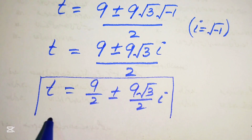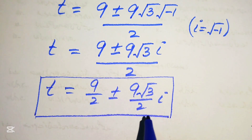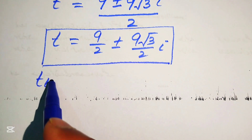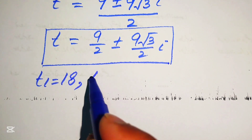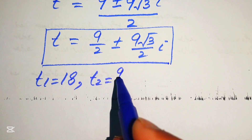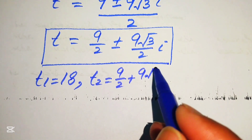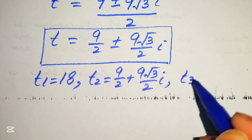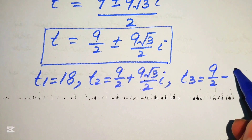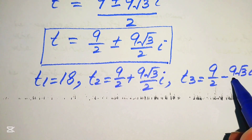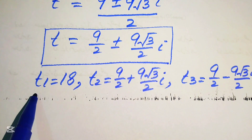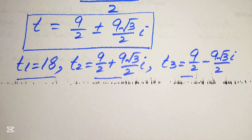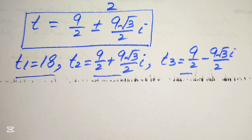Finally, the three roots of the given equation are: t₁ = 18, t₂ = 9/2 + (9√3/2)i, and t₃ = 9/2 - (9√3/2)i. These are the three roots of the given equation and this is the final answer. Thank you so much for watching this video, please subscribe to my channel for more exciting videos.